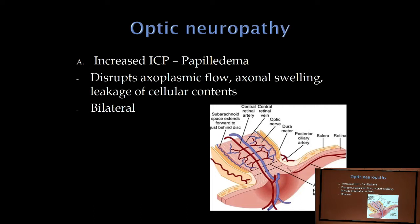Moving to the optic nerve — increased intracranial pressure. Notice the subarachnoid space coats the optic nerve and goes forward to the optic nerve head. The brain is in an enclosed skull, so with increased ICP there's nowhere for it to go — the brain can herniate, or the pressure goes forward to the optic nerve head. Increased pressure compresses all the way to the optic nerve head, disrupting axoplasmic flow. The axons swell and leak fluid, and when you look in the eye you see papilledema.